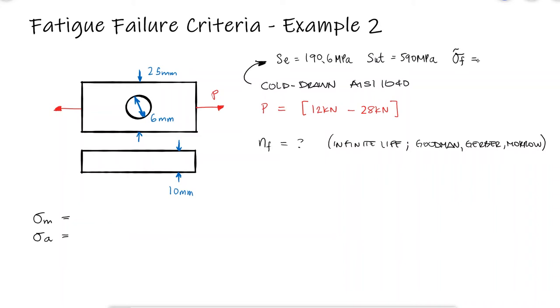As explained during example 1, link below, a reasonable estimate of the true fracture strength is 345 more megapascals than the ultimate strength. In this case we don't need von Mises stresses as the only existing stress is the normal stress due to the axial loading.